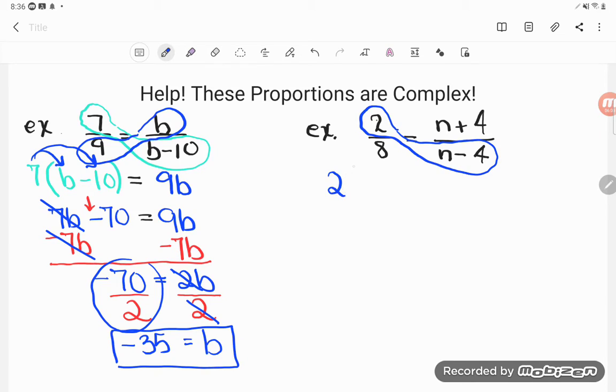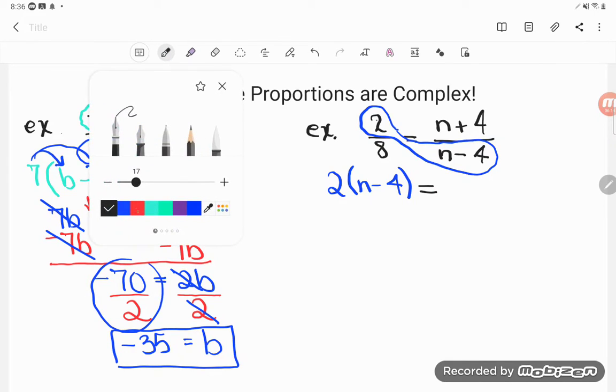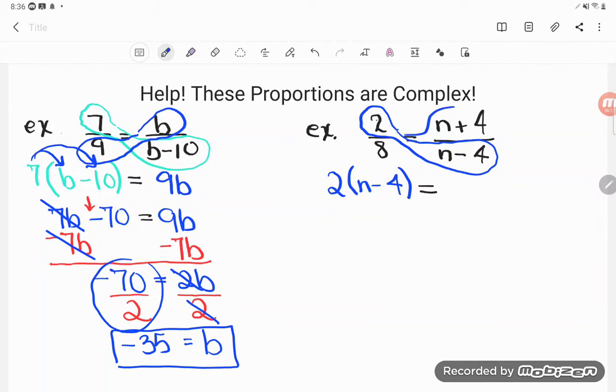So I get 2 times N minus 4 for my first cross product. It doesn't really matter which numerator and denominator you start with - you'll get the same thing. On the other side, numerator times denominator, I get 8 times the quantity N plus 4. Now as usual, if there's any simplifying we can do, we should do that first. 2 times N is 2N. Remember that multiplication passes out over groupings, so 2 times negative 4 is negative 8.